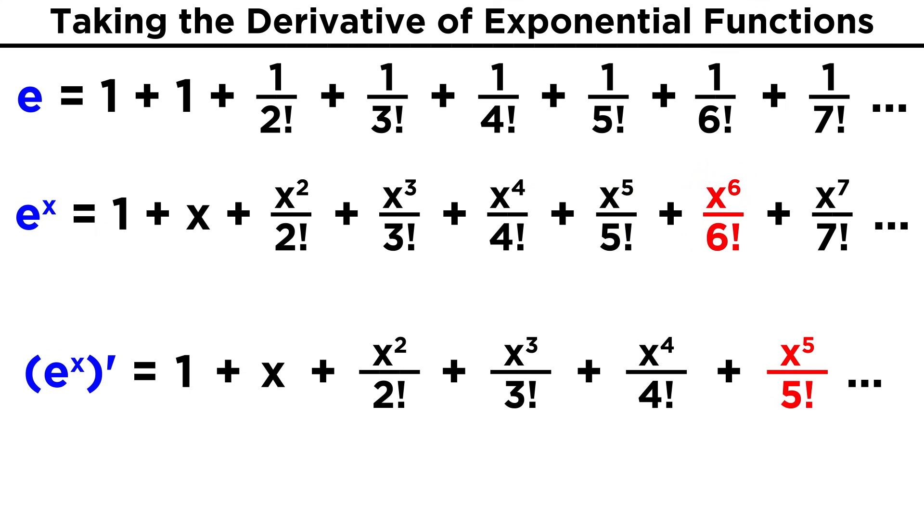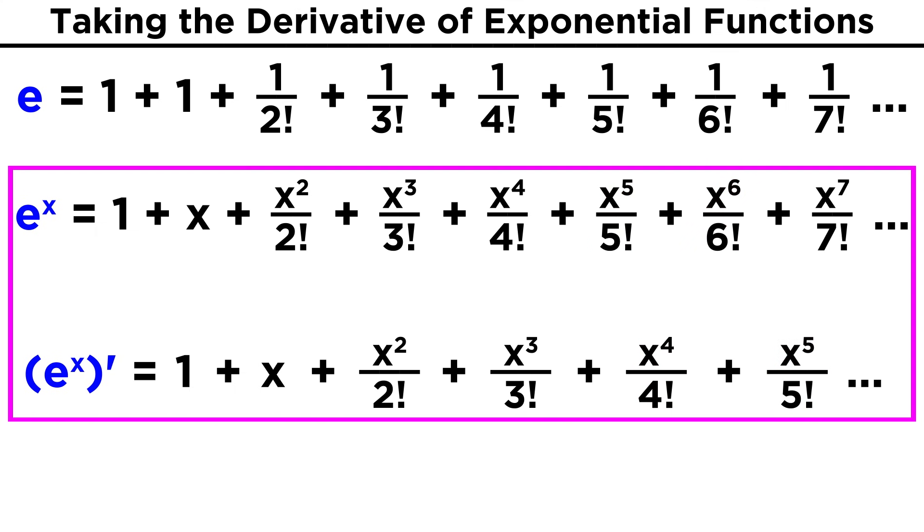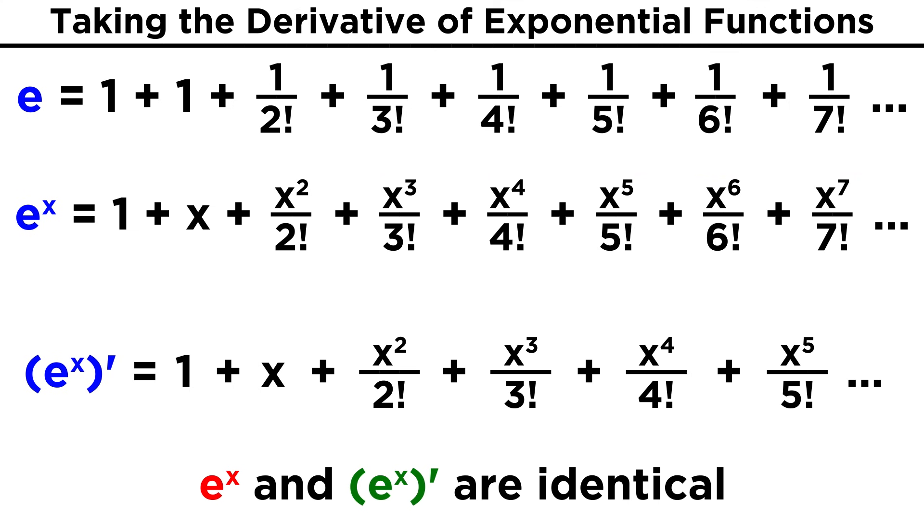Amazingly, this will continue all the way to infinity, and as we will notice, this series ends up completely unchanged. So this is one way of proving that the derivative of E to the X is simply E to the X.